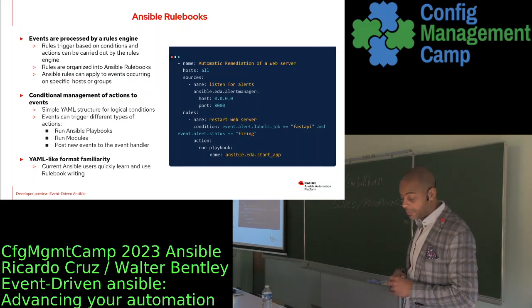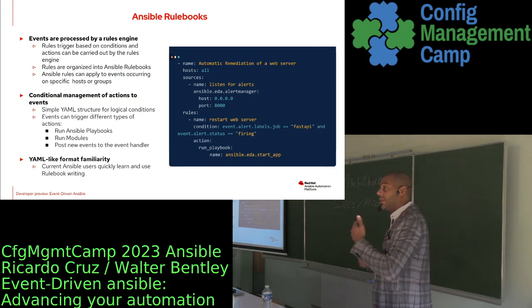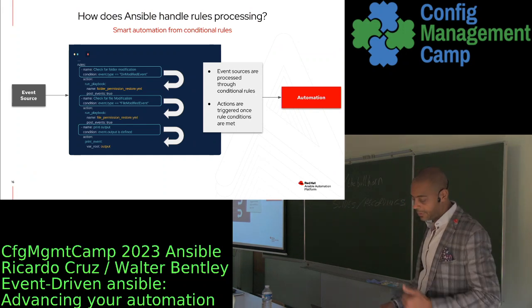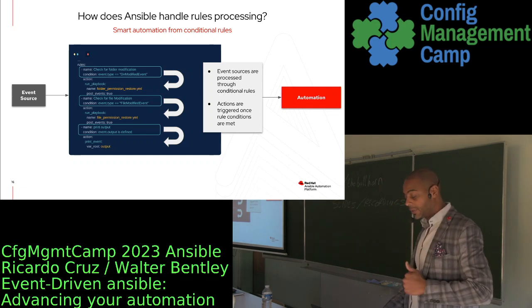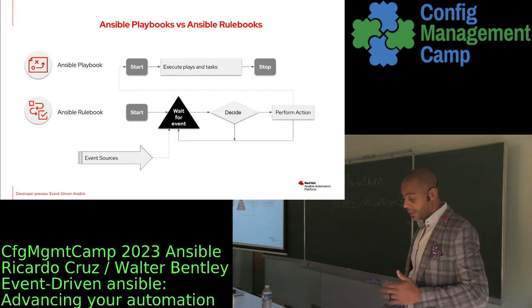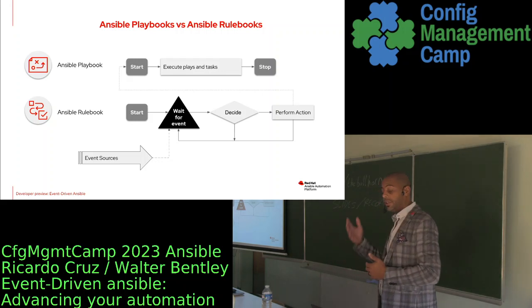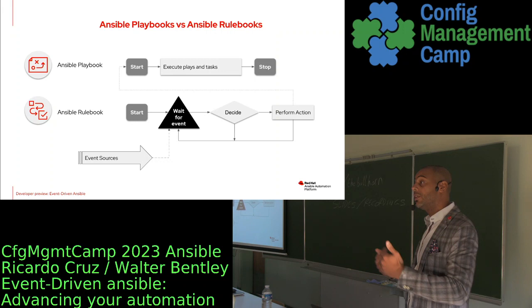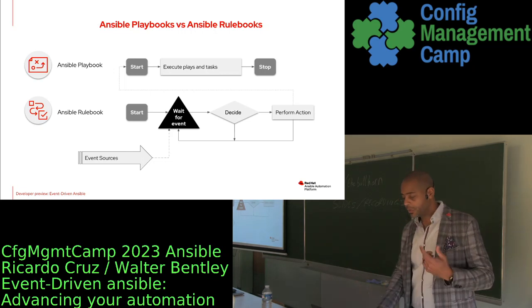One important thing to call out: when you execute a rule book, it's constantly running and watching for that event to occur. It's not like an Ansible playbook that runs and then stops. Rule books behave differently — once executed, they wait for the event. When that event occurs, they decide if it meets the criteria. If it doesn't, nothing happens. If it does, it performs an action and then goes back to waiting for the next event.